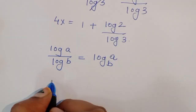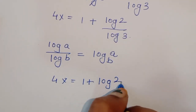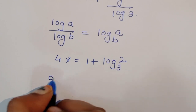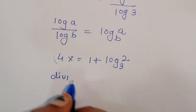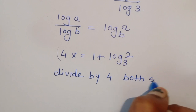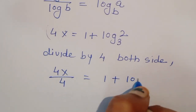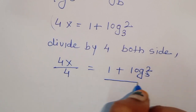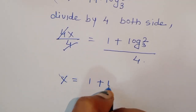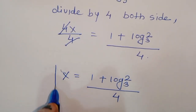We can write this as 4x is equal to 1 plus log of 2 to the base 3. Now to find the value of x we divide both sides by 4. We get 4x divided by 4 is equal to (1 plus log of 2 to the base 3) divided by 4. So x is equal to (1 plus log₃2) divided by 4. This is the value of x.